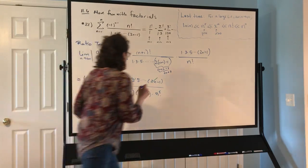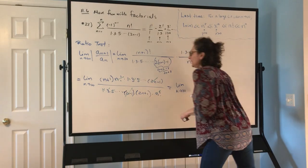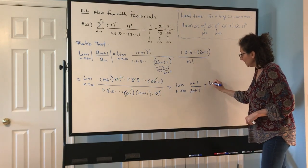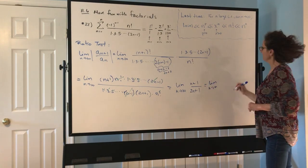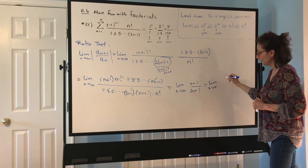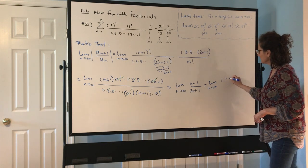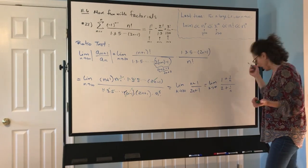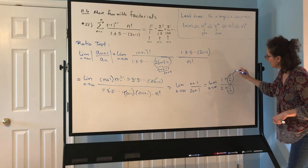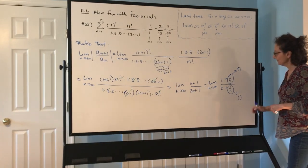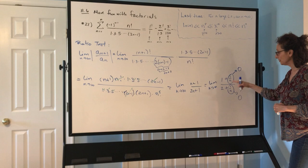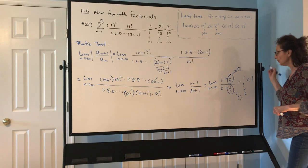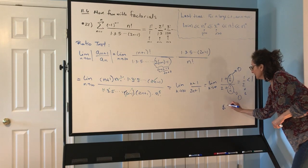After all cancellations, we're left simply with the limit as n goes to infinity of (n+1)/(2n+1). That's infinity over infinity, so we divide top and bottom by n: we get (1 + 1/n)/(2 + 1/n). As n→∞, the 1/n terms go to zero, giving us 1/2. Since L = 1/2 < 1, by the ratio test the series converges absolutely.